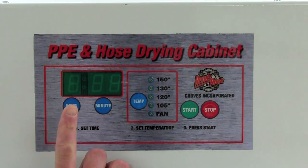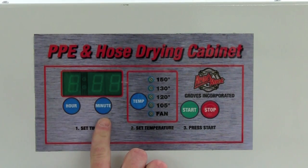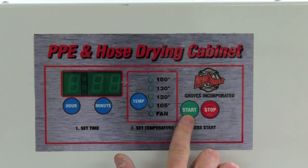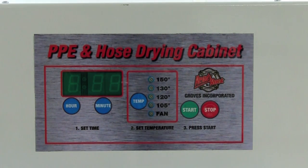To begin drying in the cabinet, first select your hours and minutes of desired drying time, along with your temperature, and push the convenient start button. If you wish to stop the dryer before the drying time is up, just hit the stop button.